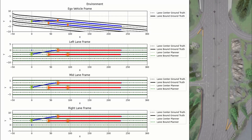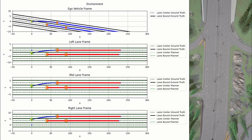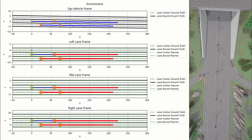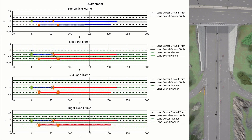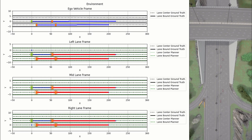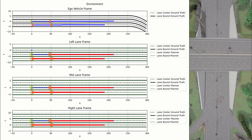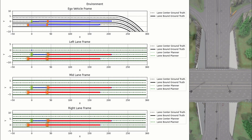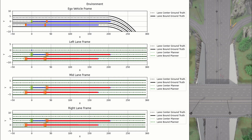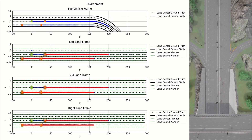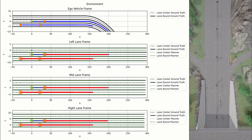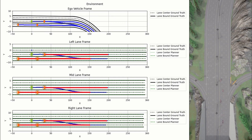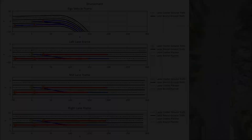A suitable environment abstraction can reduce the complexity of the planning algorithms. In this case, a curvilinear reference frame is chosen relative to the target lane center. Vehicle shapes are approximated by axis-aligned ellipses, a sufficient shape approximation in highway environments.